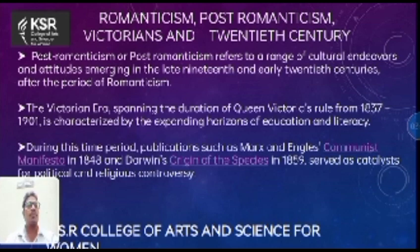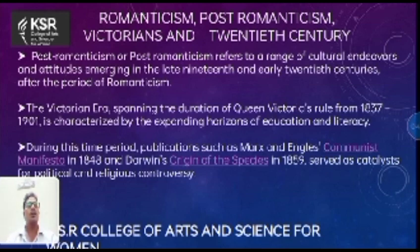During this time period, publications such as Marx and Engels' Communist Manifesto in 1848 were seriously translated into many languages based on the interest of those engaged with their philosophy. Darwin's On the Origin of Species, a key text in biology exploring the origins of species, was also translated into many languages in 1859, and served as a catalyst for political and religious controversy during the Victorian and 20th century period.